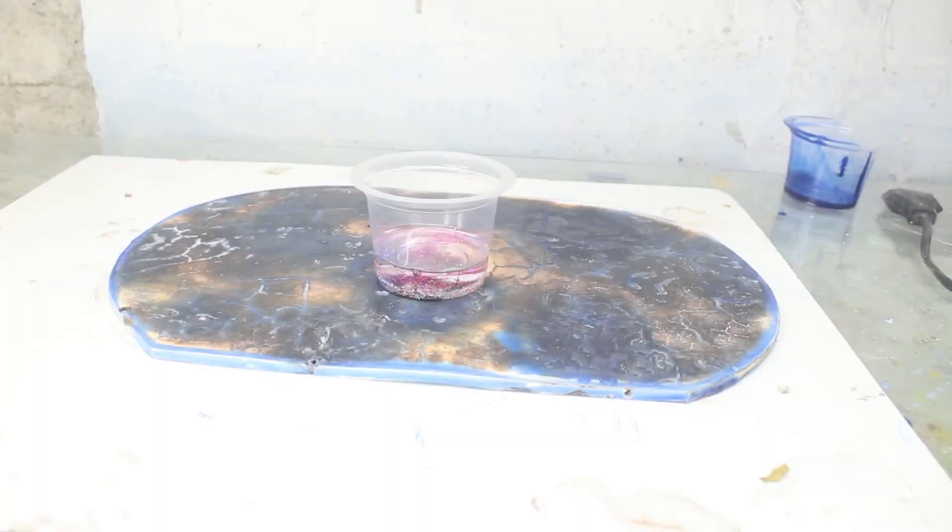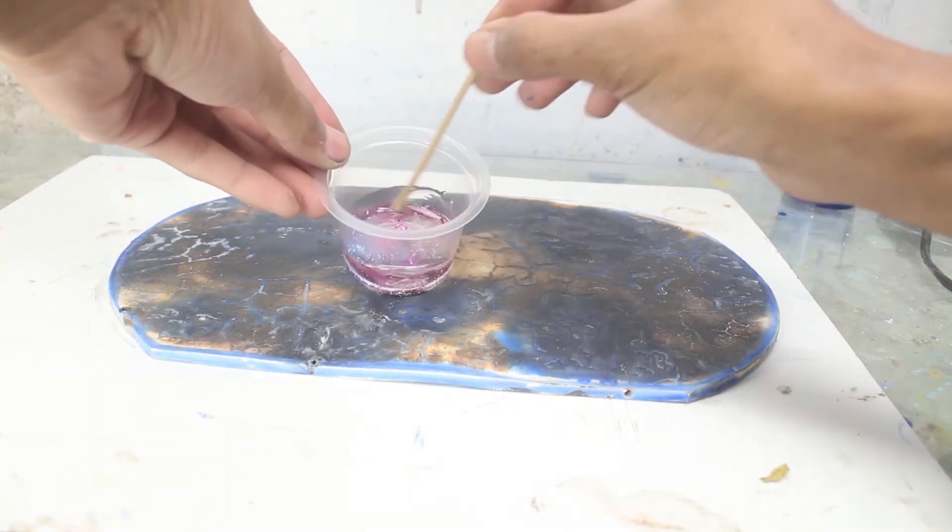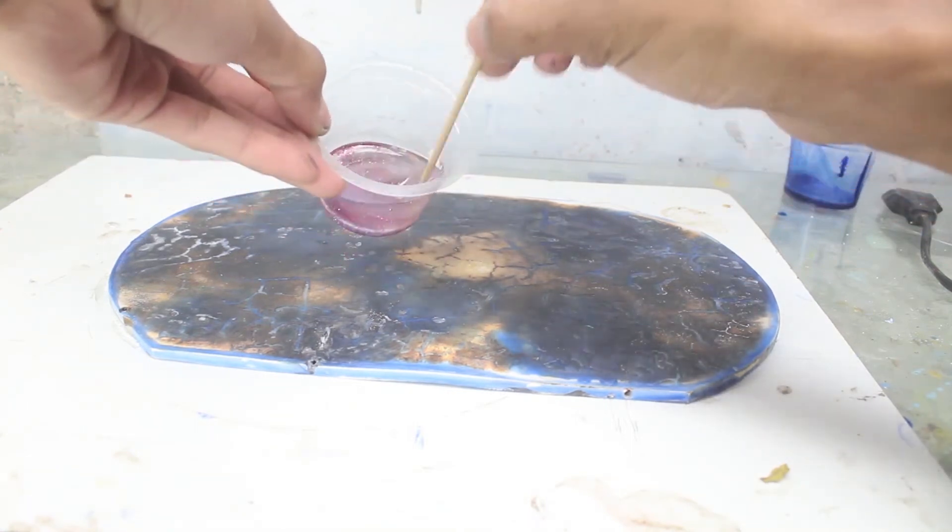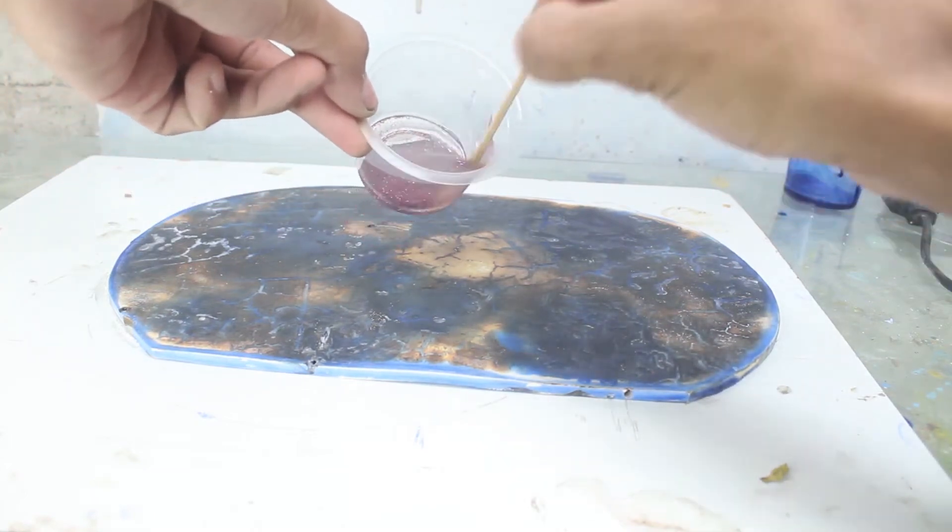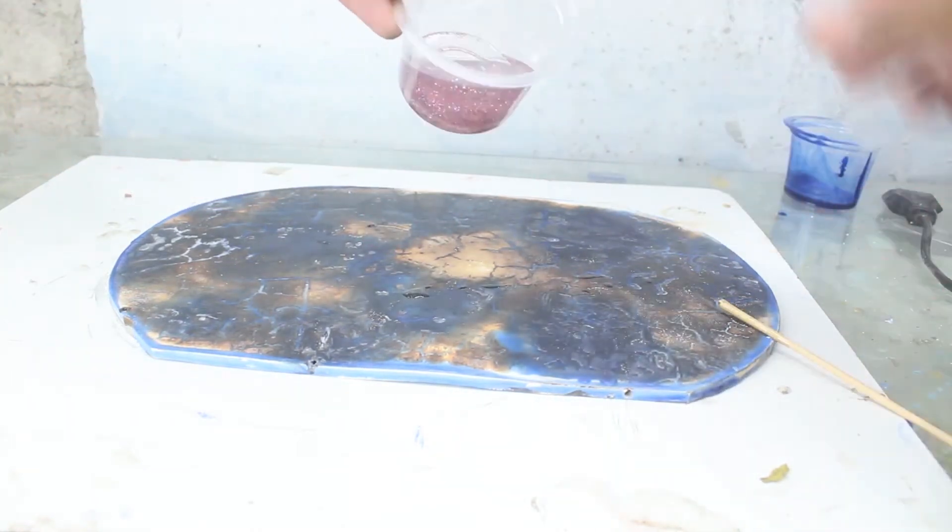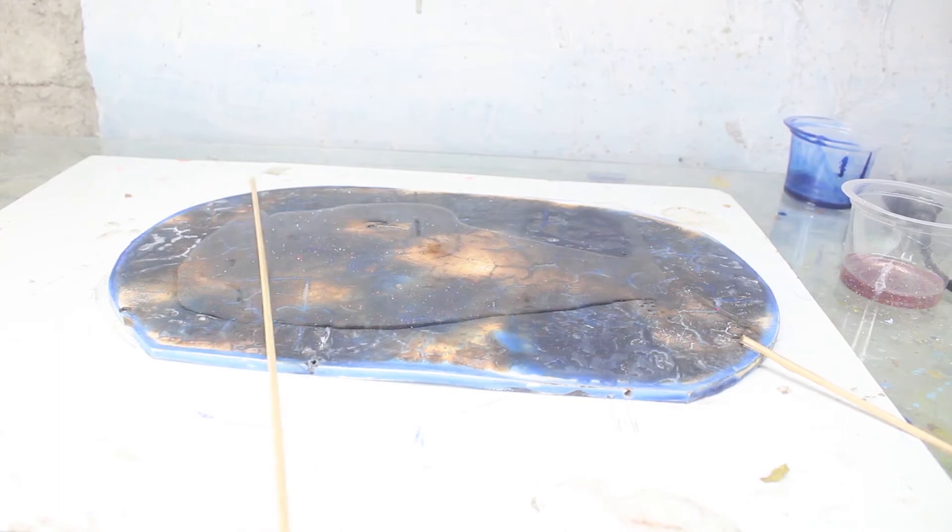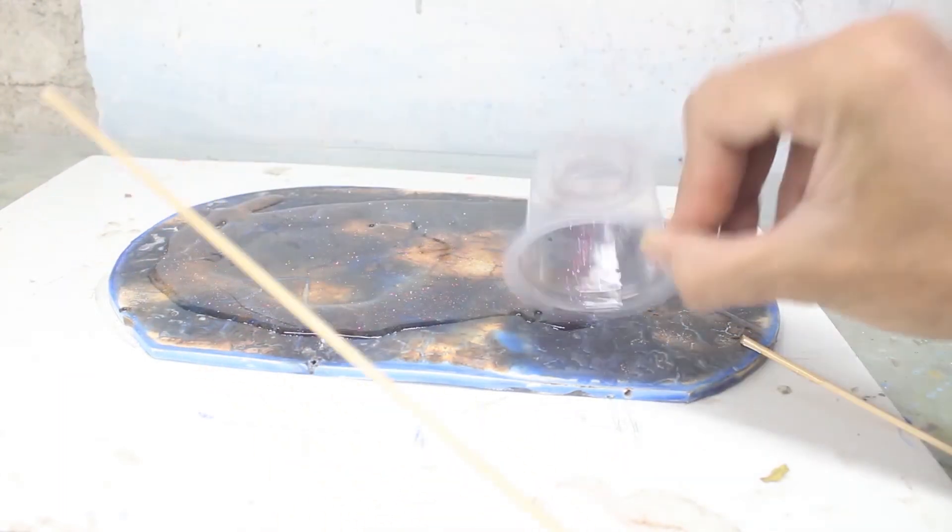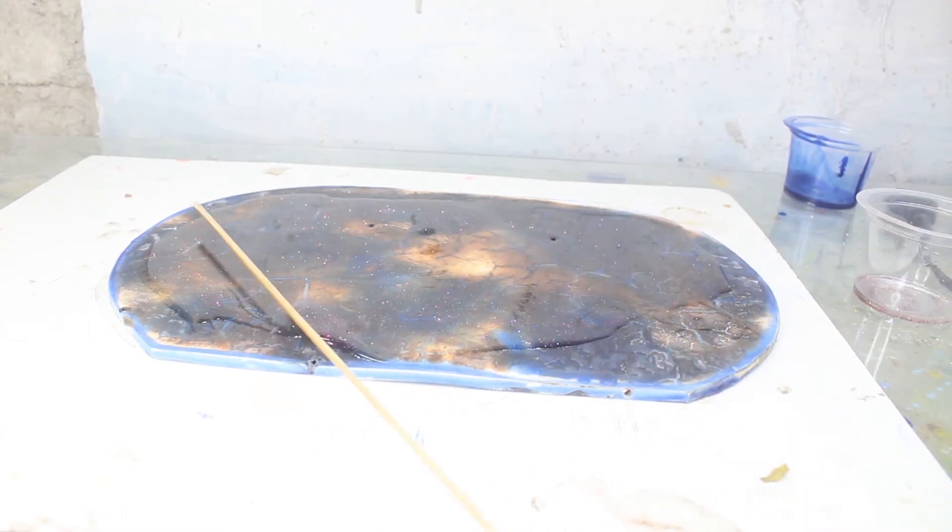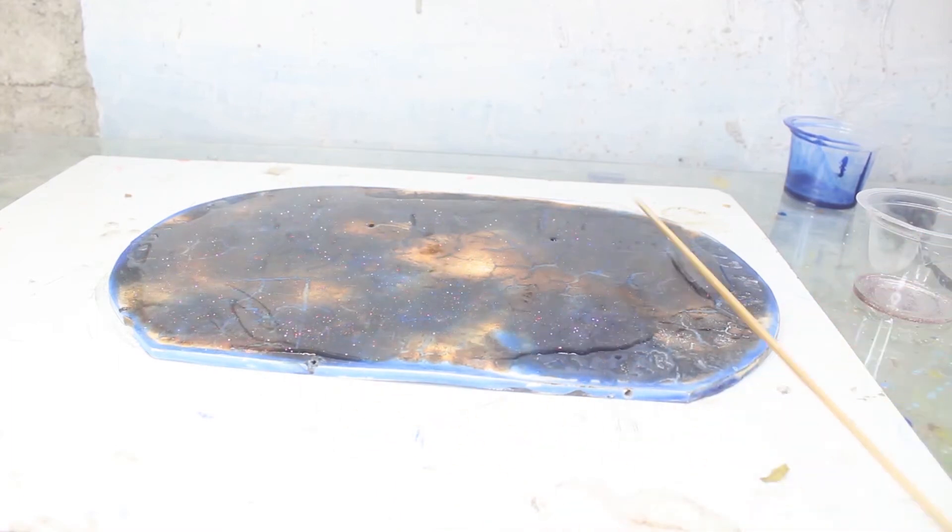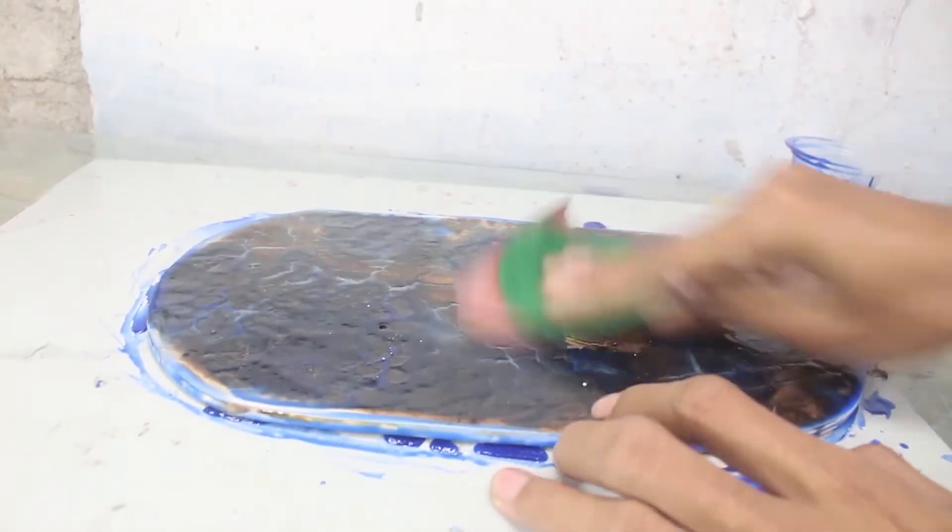Disini saya ada glitter. Saya akan tuang glitter disini. Lalu saya ratakan dia. Disini dia harus diamplas juga ya. Sampai dia benar-benar halus.